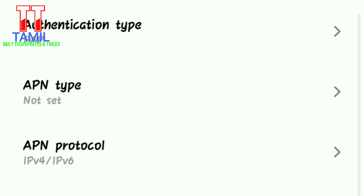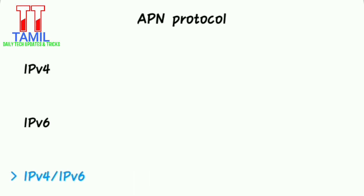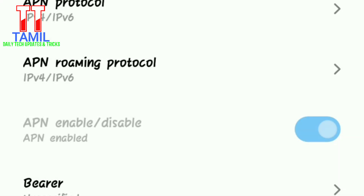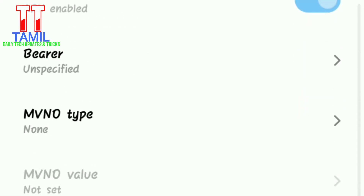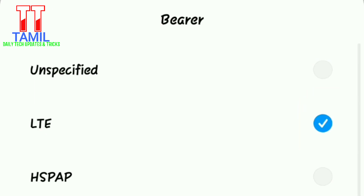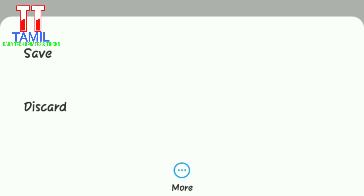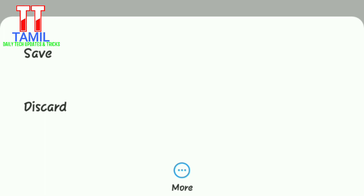Click PAP for authentication. Then select APN Type — set it to default. APN protocol: IPv4/IPv6. APN roaming protocol: IPv4/IPv6. For bearer settings, select LTE. Leave unspecified options unselected. If you want to close LTE, you can save the BSNL Max APN settings.